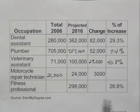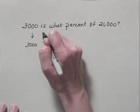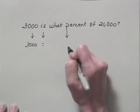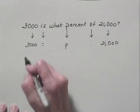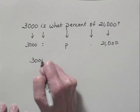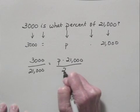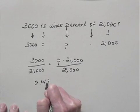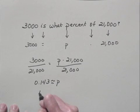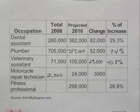And again, we want the percent of increase. We're asking the question: 3,000 is what percent of 21,000? So we write an equation: 3,000 equals P times 21,000. We'll divide on both sides by 21,000 to find P. 3,000 divided by 21,000 is approximately equal to 0.143. Writing this in percent notation, 14.3% is approximately equal to P. So let's fill that in the table.